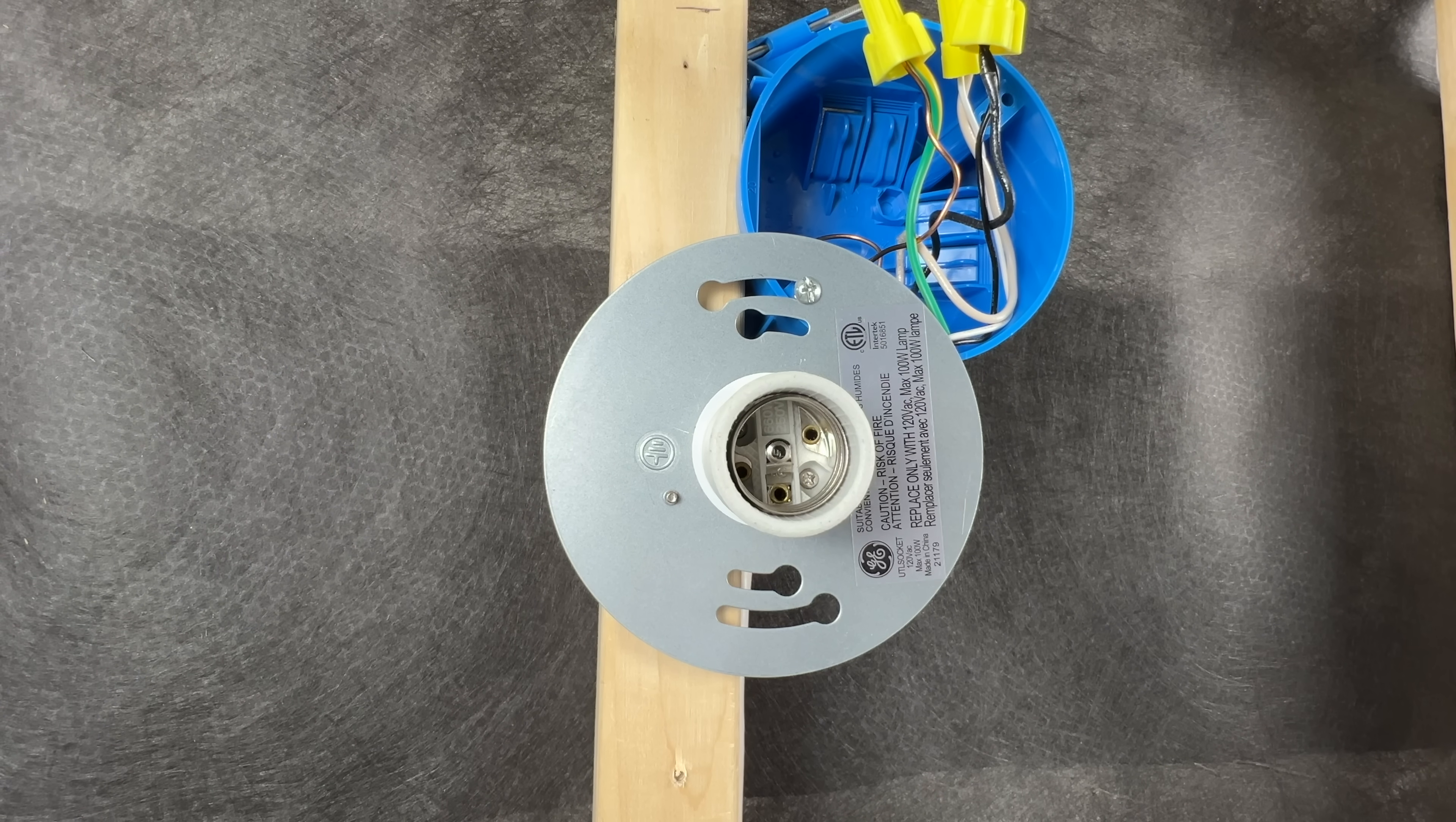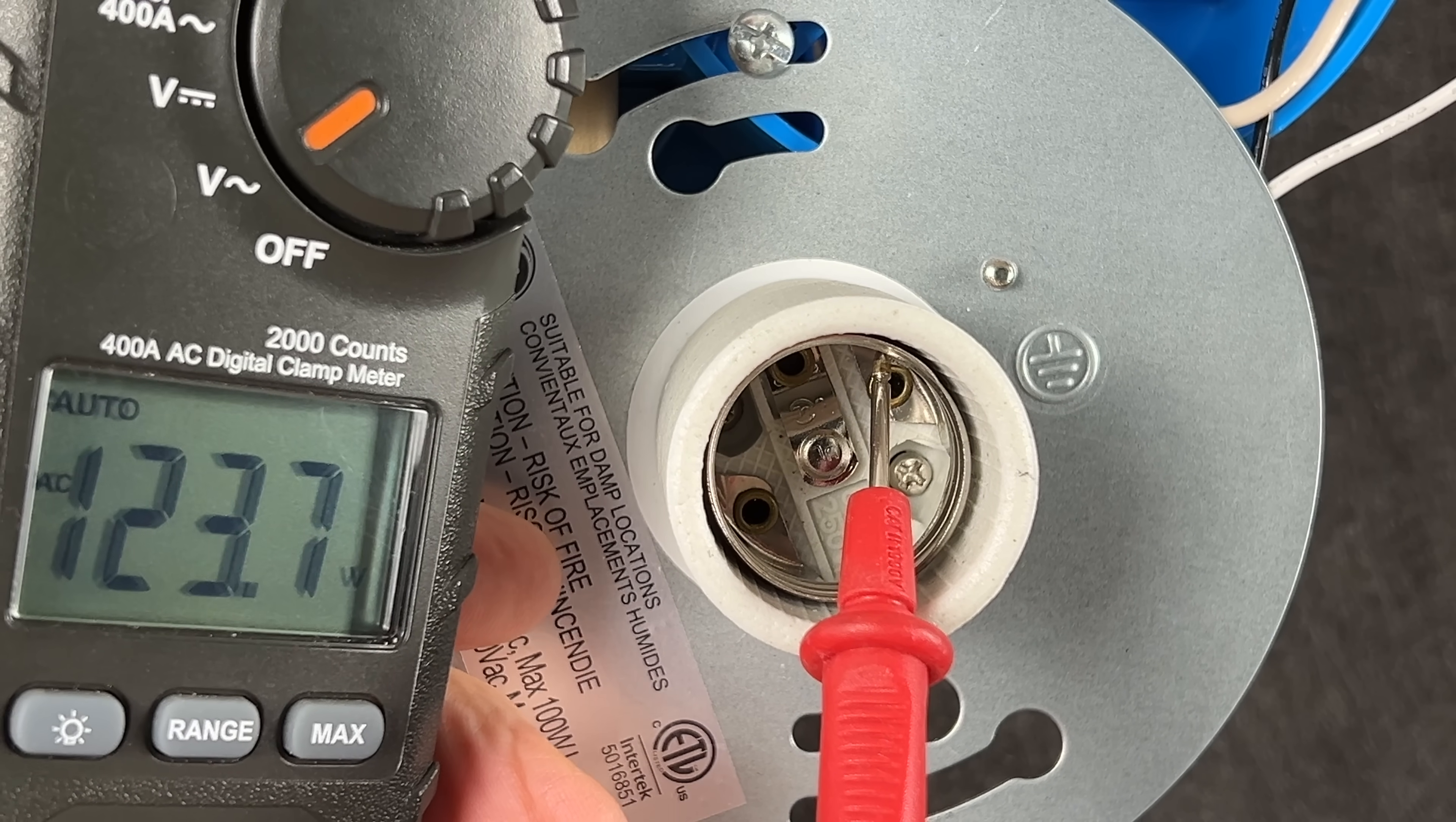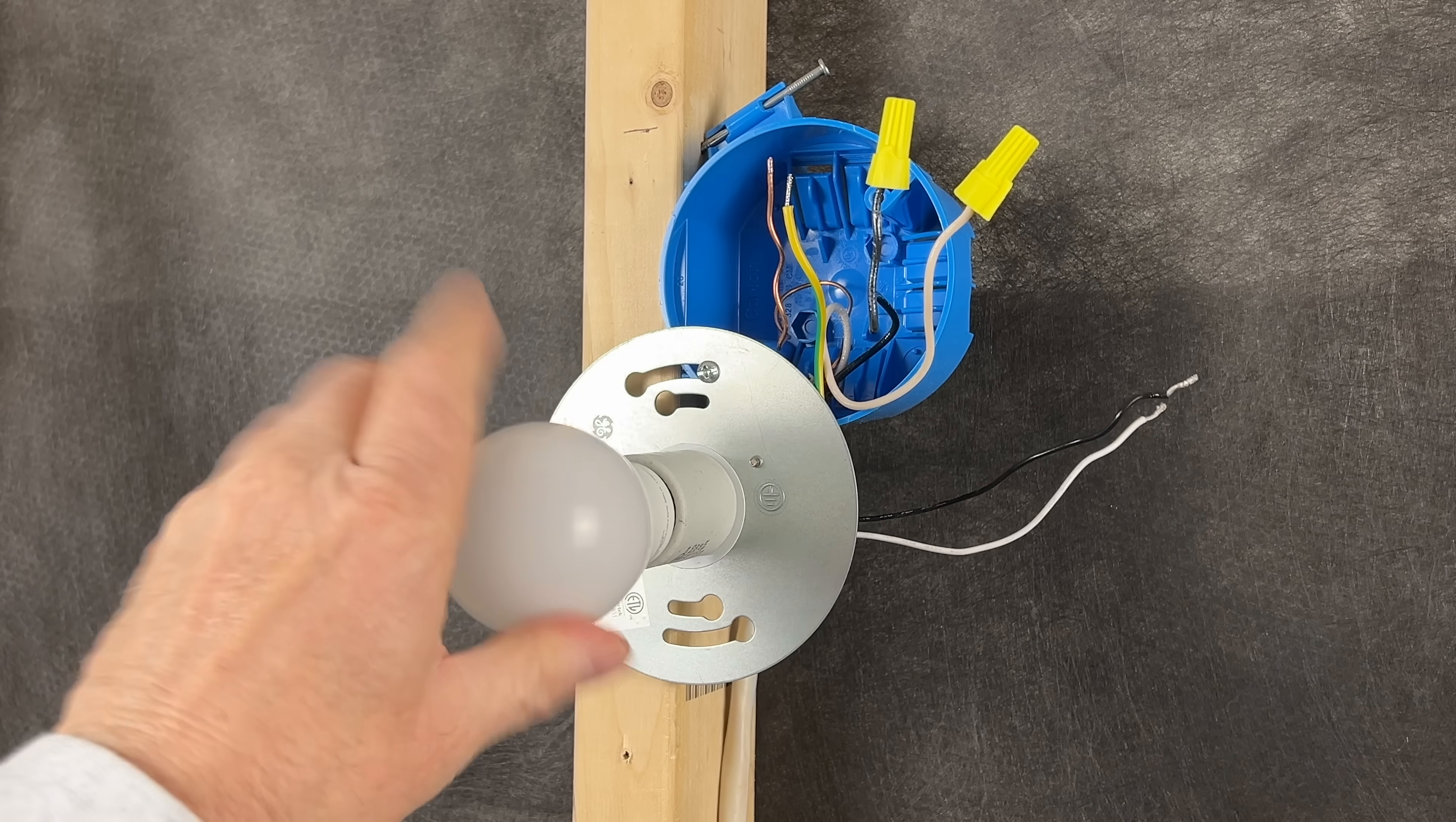Screw shell fixtures are polarized, meaning they're designed to have the hot wires connected to the small tab at the bottom of the opening and the neutral wire connected to the screw shell. When this is reversed, the screw shell is energized and it would be very easy to get shocked when replacing a light bulb. And fourth, having both the screw shell and the tab energized with the light off can be very dangerous.